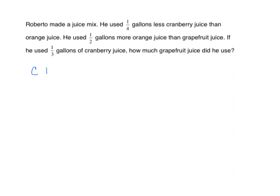The only thing we know for sure is that he used precisely one-third gallon of cranberry juice — that's what makes this one a little tricky. Even though it's the last part of the word problem, we start with that. He used one-fourth gallon less cranberry juice than orange juice, meaning orange juice is more. So we start with orange juice, add our one-third for cranberry juice, and one-fourth more — showing one-fourth less cranberry than orange juice.